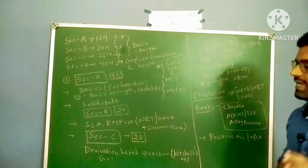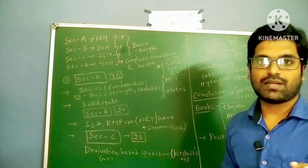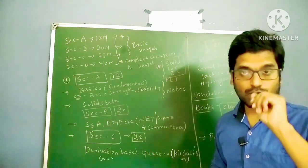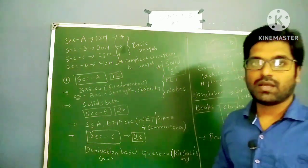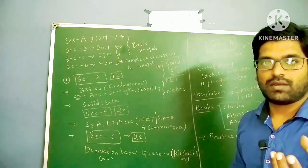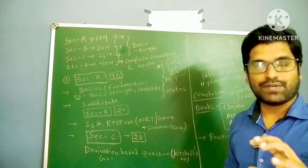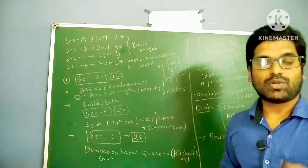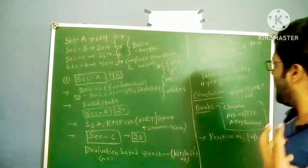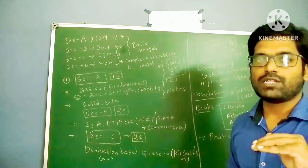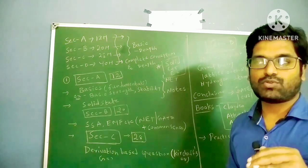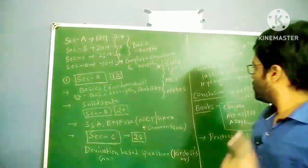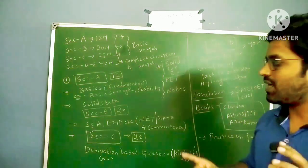For Section D, if you have CSIR NET and GATE knowledge and have practiced previous year questions, you can attempt at least two questions. One question always comes from spectroscopy — if you know how to determine structure using NMR, IR, and mass spectrometry data, you can attempt it. Other recurring topics include group theory, lattice enthalpy from periodicity, hydrogen atom, and quantum chemistry topics like Hückel molecular orbital theory.